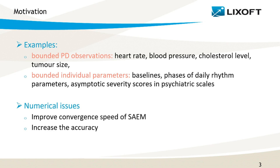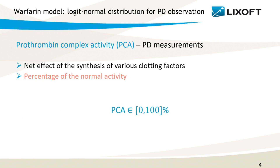Now I will use two examples to explain how to adjust the limits of the logit distribution in Monolix. The first example is a warfarin PK-PD model where PD observations are bounded. Warfarin is a widely used oral anticoagulant, and you can find a case study dedicated to its PK modeling workflow on our webpage. Prothrombin complex activity is often a PD observation because it represents the net effect of the synthesis of various clotting factors. It is usually defined as the percentage of normal activity, which means that the observations lie between 0 and 100%.